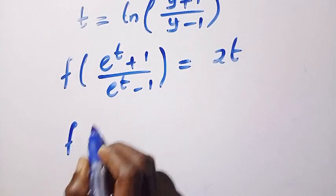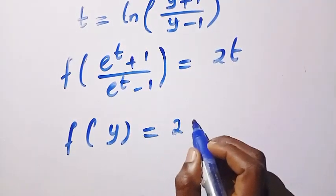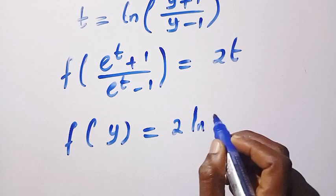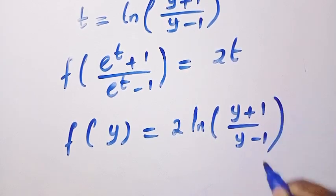Therefore, we have f(y) equals—since t has been found—2 times ln[(y + 1)/(y - 1)].